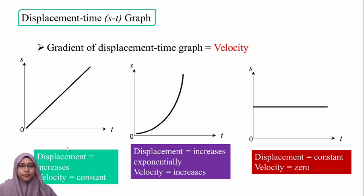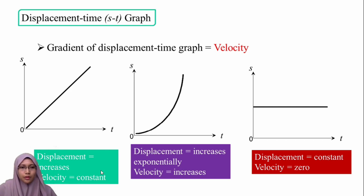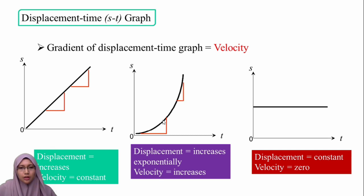For the displacement-against-time graph, the gradient equals velocity. If the displacement is increasing and the gradient is constant, then the velocity is constant. If the displacement is increasing exponentially and the gradient is increasing from smaller to higher values, it means the velocity is increasing.